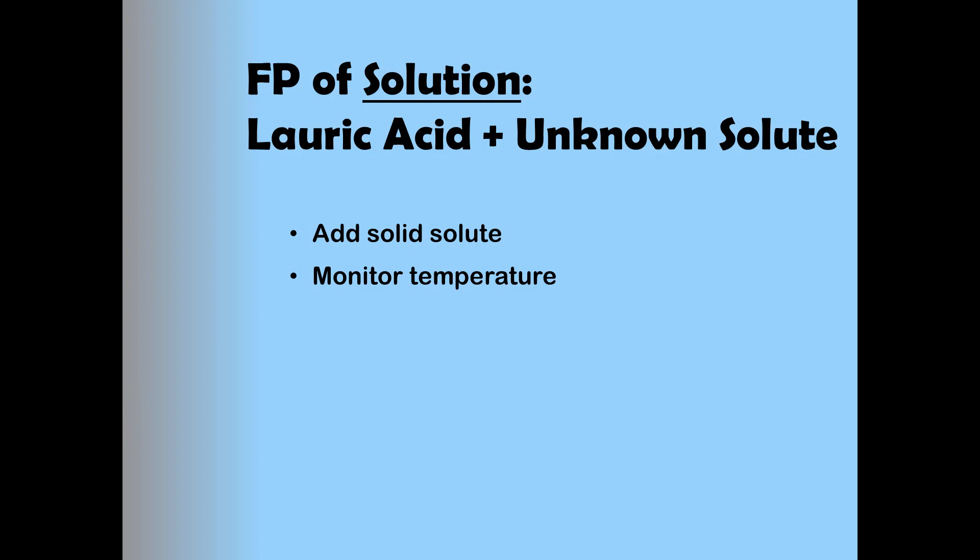Alright, we're now ready to see how this freezing point changes for a solution which is defined as a mixture of the solvent with its dissolved solute. You'll add an unknown solute to your lauric acid to make the solution and then you'll simply determine your new freezing point by the same procedure. Just heat it up and let it cool.